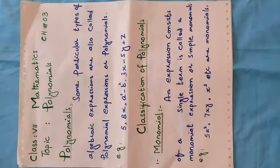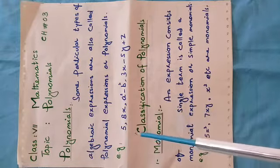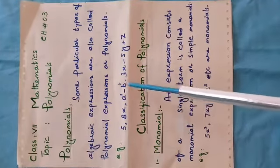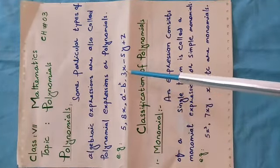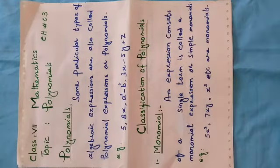So what is a polynomial? Some particular types of algebraic expressions are called polynomial expressions, or polynomials. For example: 5, 8x, a² minus b², and 3x minus 5y plus z. These are polynomial expressions.